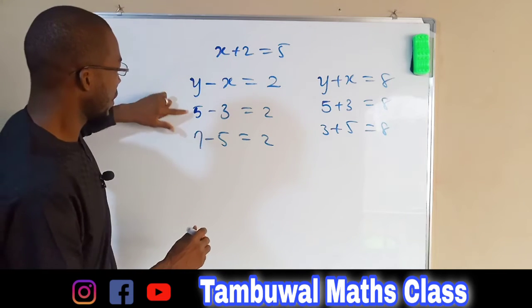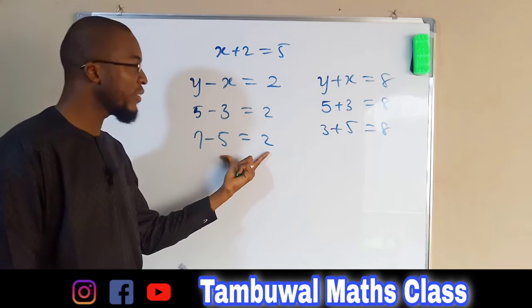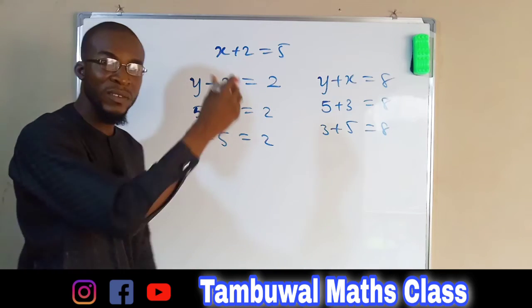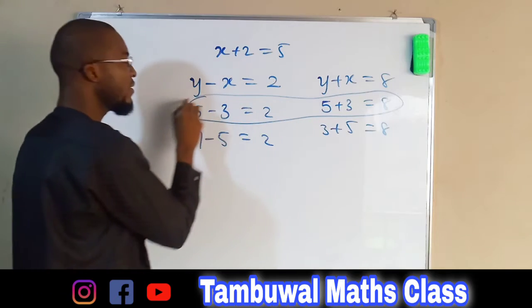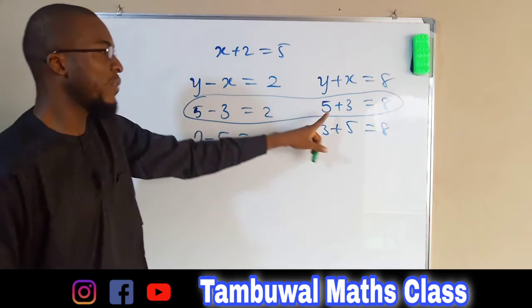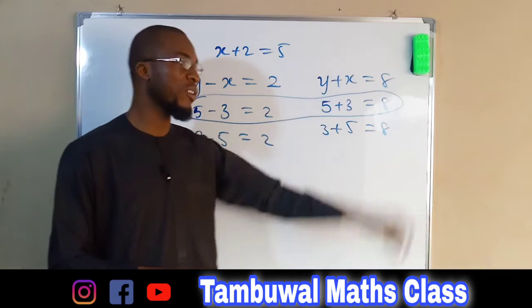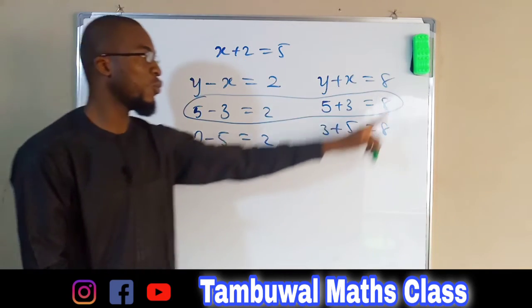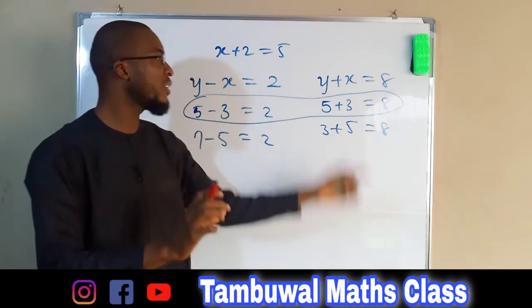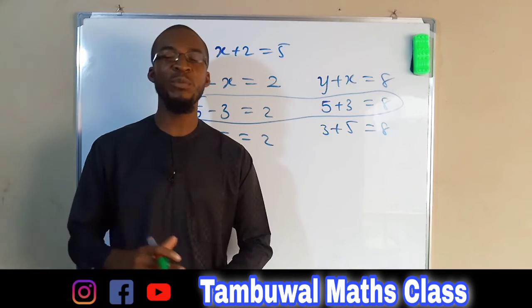We can see that y equals 5 and x equals 3 satisfies the first equation: 5 minus 3 equals 2. And using the same values in the second equation: 5 plus 3 equals 8. However, y equals 7 and x equals 5 satisfies only the second equation individually but not the first — because 7 plus 5 equals 12, not 8, and 3 minus 5 is negative 2, not positive 2. So only the group y equals 5, x equals 3 satisfies both equations simultaneously. In my next class I will show you the different methodologies used in solving simultaneous linear equations.